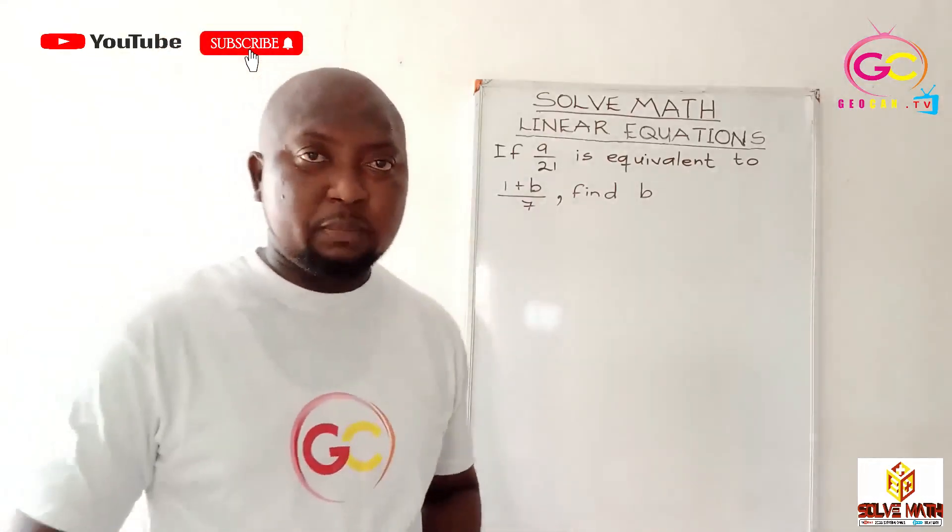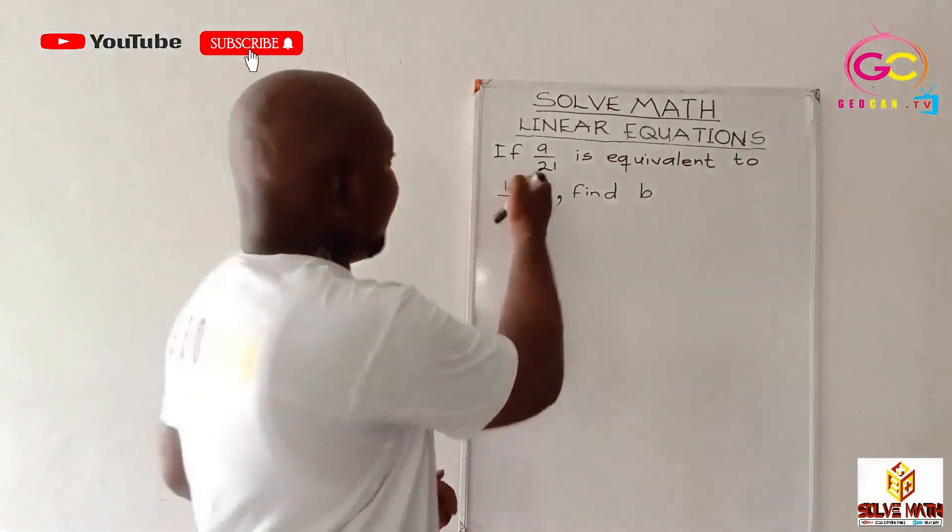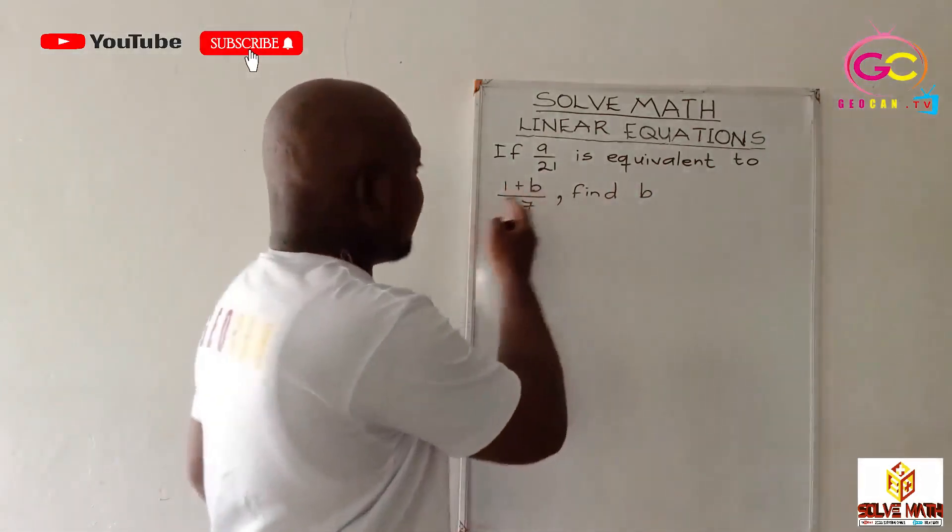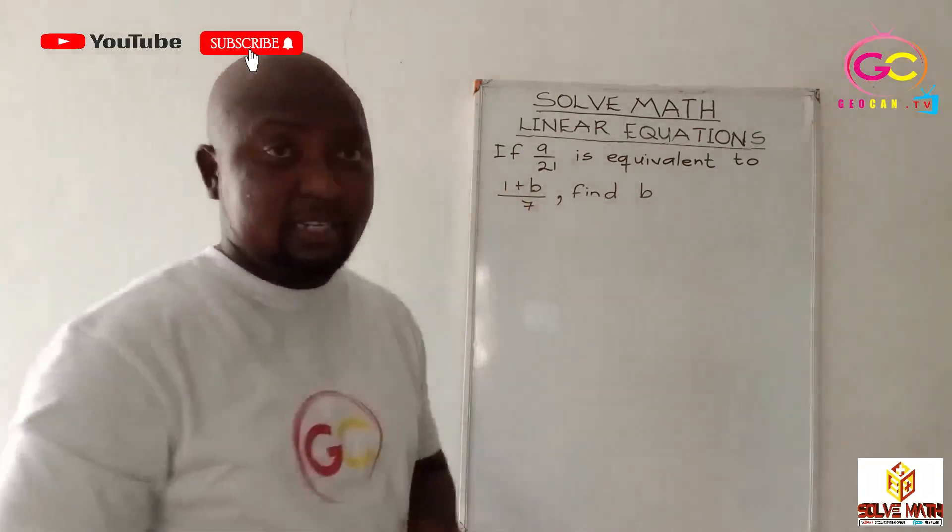Please, today, what do we have? Please pay critical attention here. If 9 over 21 is equivalent to 1 plus B all over 7, find B.